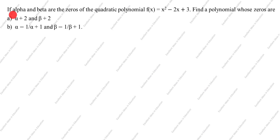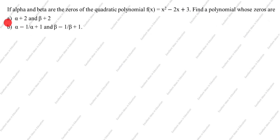Hi friends, welcome to my channel, Excellent Ideas in Education. Today we are going to solve this polynomial problem. This is a very important problem: if alpha and beta are the zeros of the quadratic polynomial f(x) = x² - 2x + 3, find a polynomial whose zeros are: first, alpha plus 2 and beta plus 2; second, (alpha minus 1)/(alpha plus 1) and (beta minus 1)/(beta plus 1).